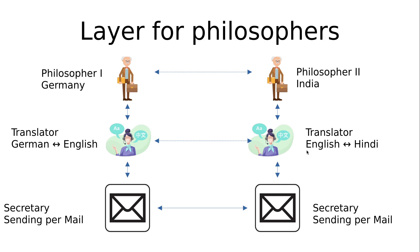So this was a very simple example about how a layer model works. In my next video we will take a look at the OSI layer model. I think that's it for today. I hope you enjoyed the video and learned something. In case you want to support my work, you can buy me a coffee at buymeacoffee.com slash customers for Linux. Thanks for watching and goodbye!